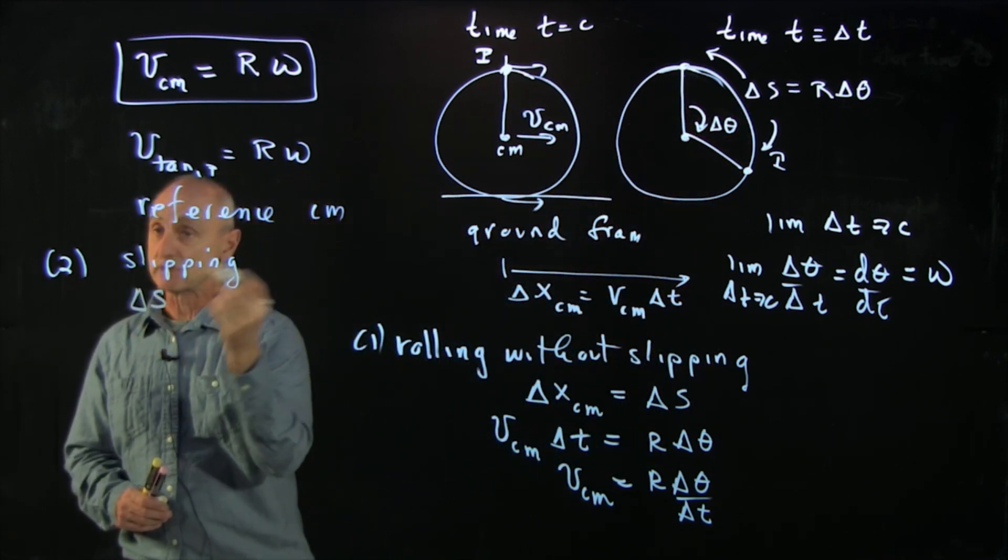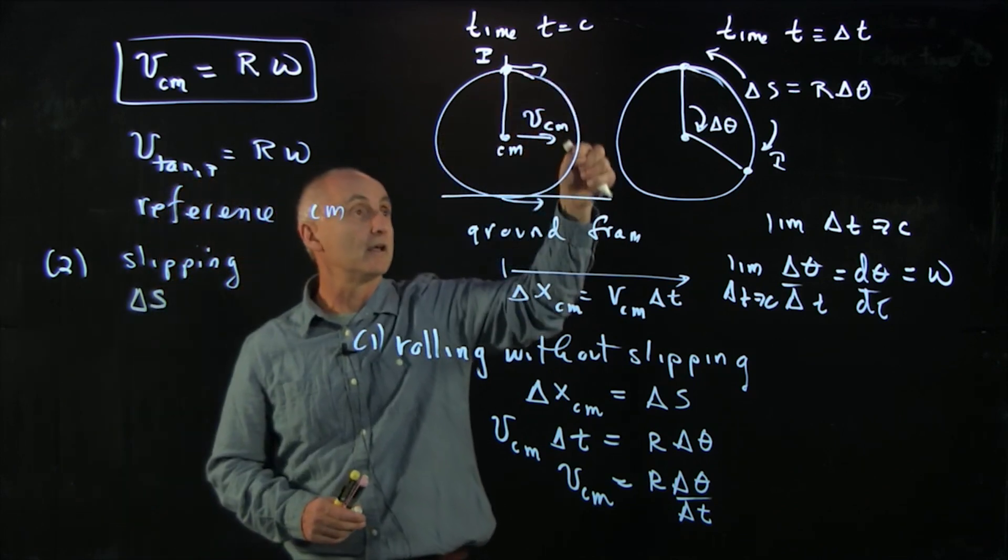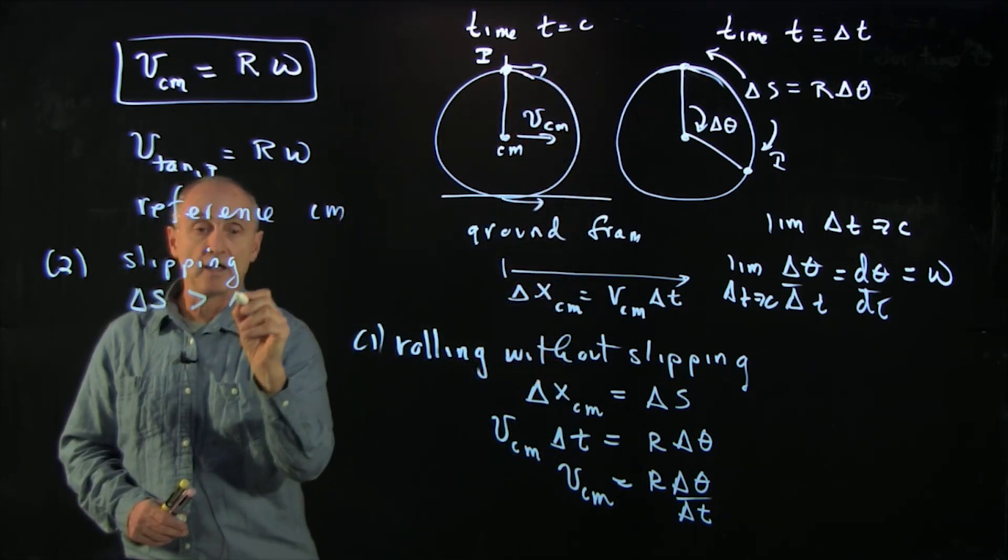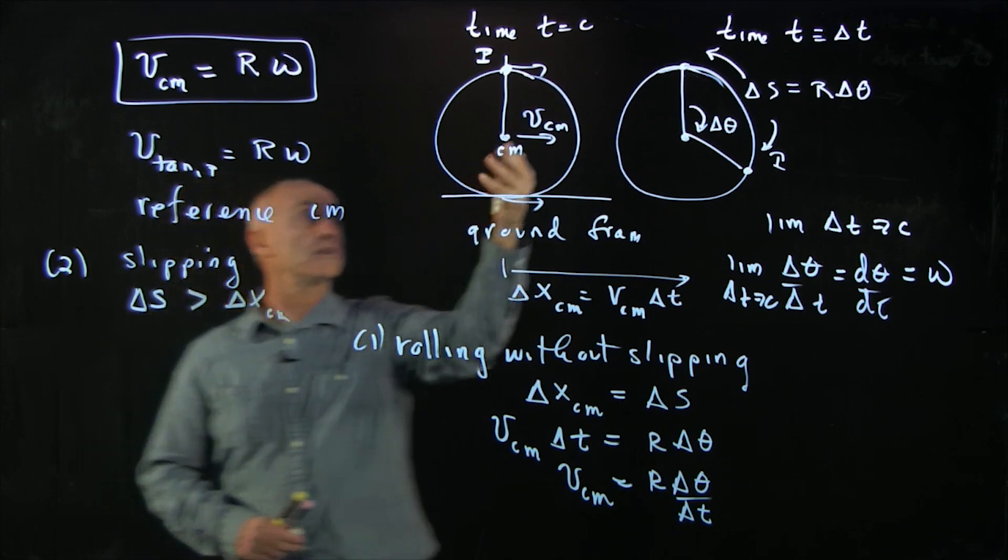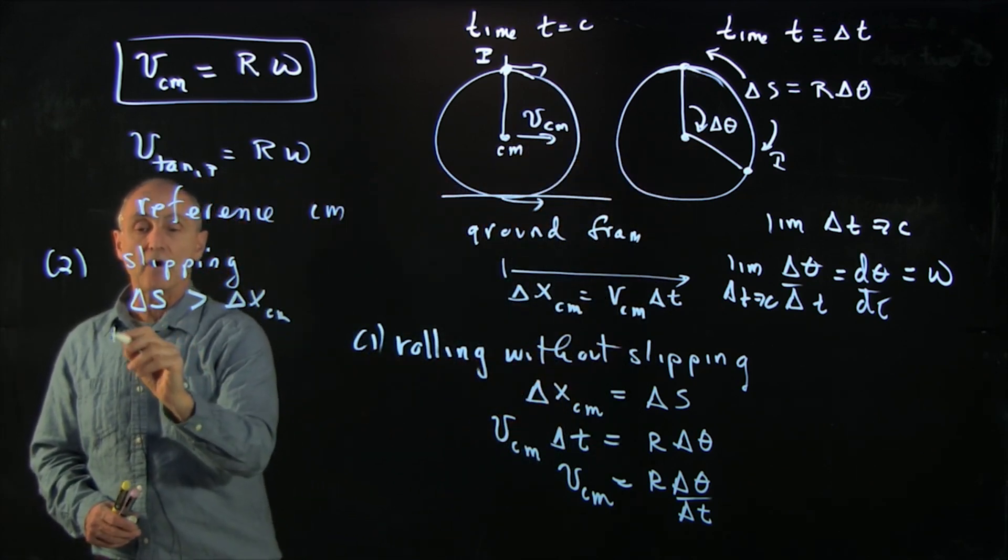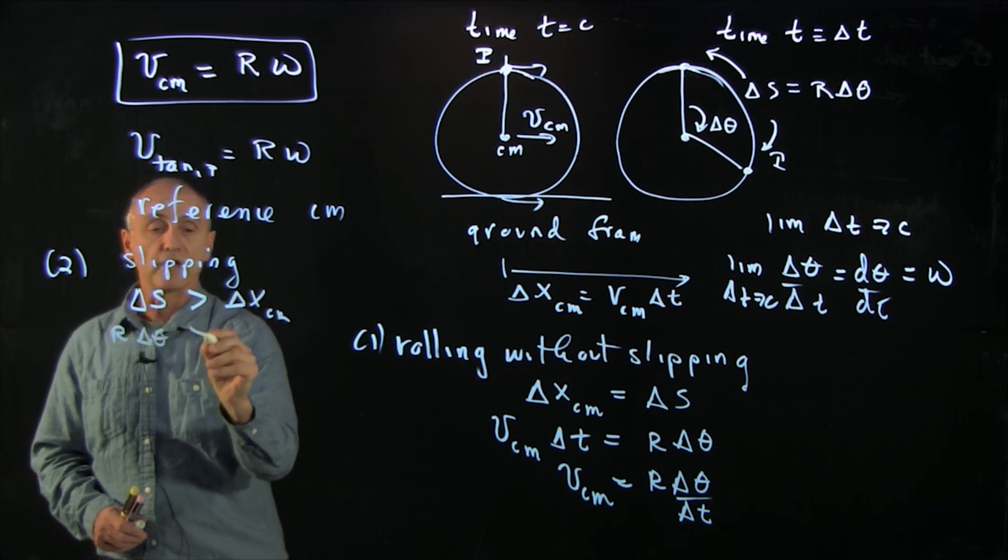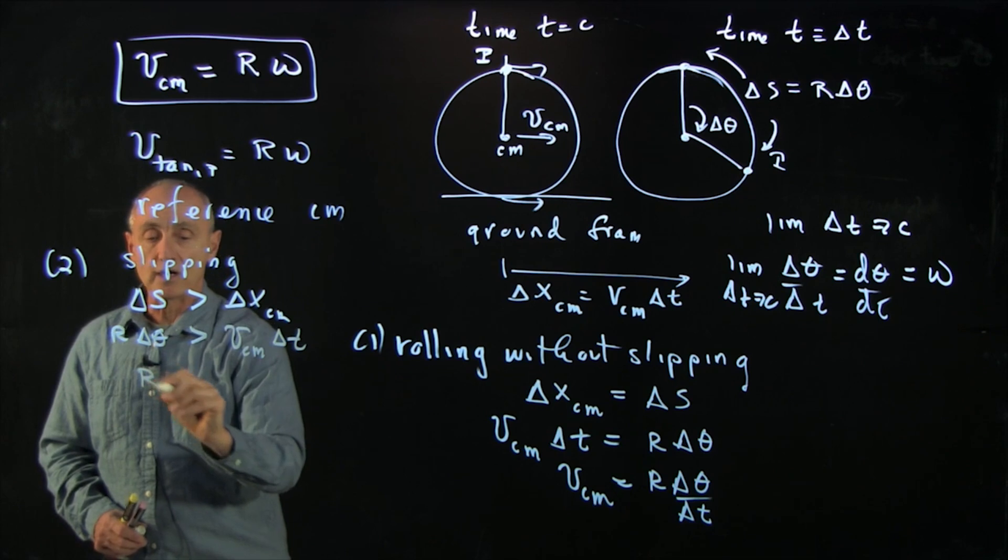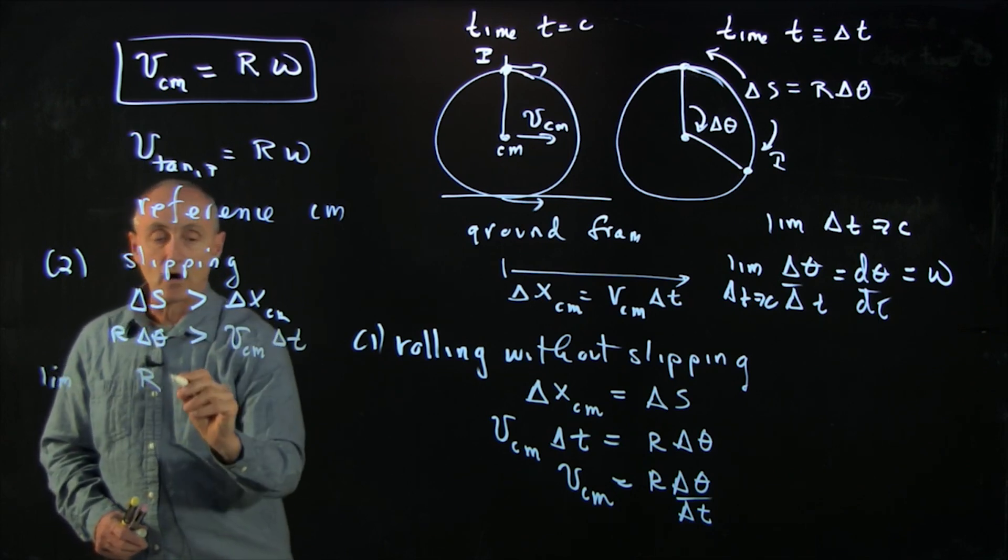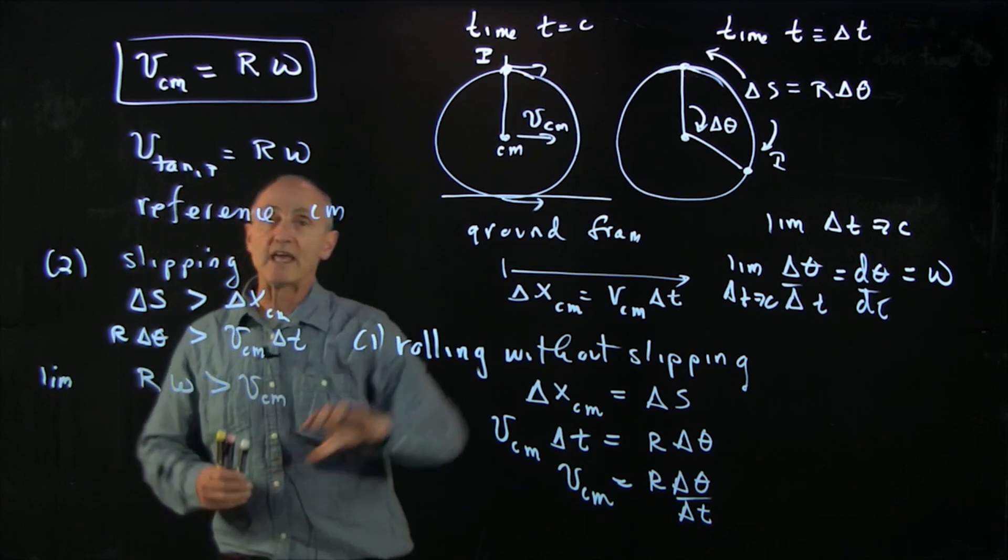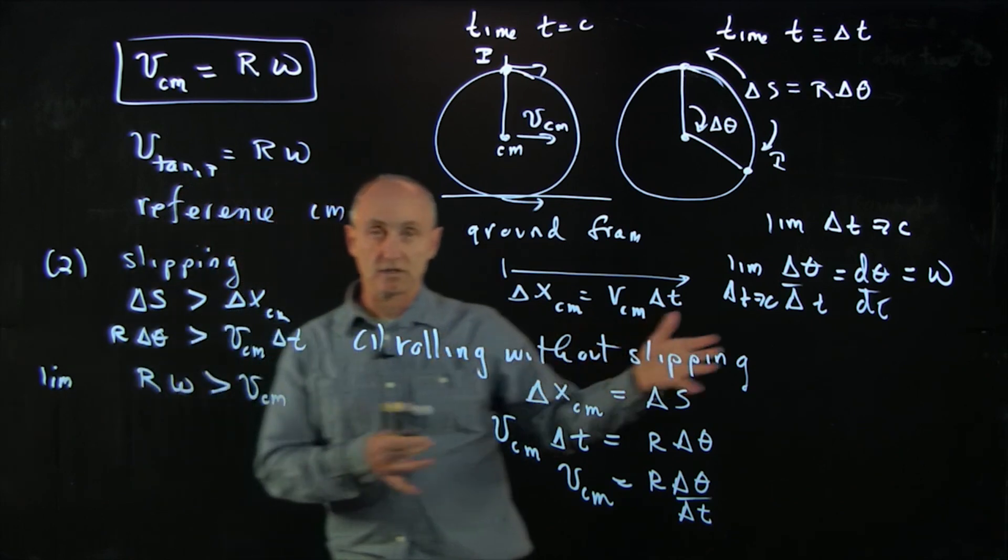So we have delta s representing the arc length that the point is moved in the center of mass frame is greater than how far the center of mass is moving. And so again, we have r delta theta is greater than v cm delta t, or in the limit r omega is greater than v cm. You can say it's spinning faster than it's translating.